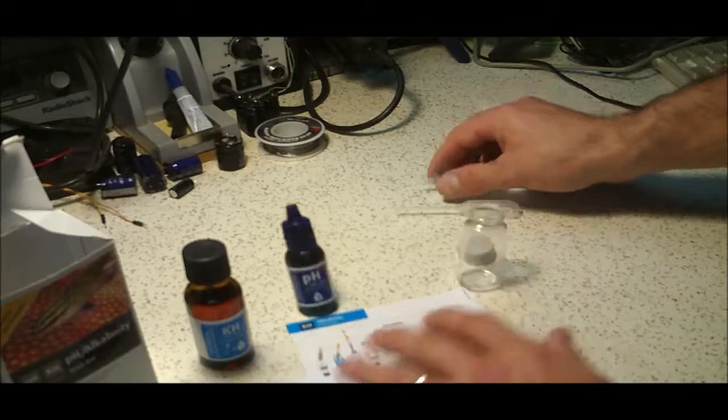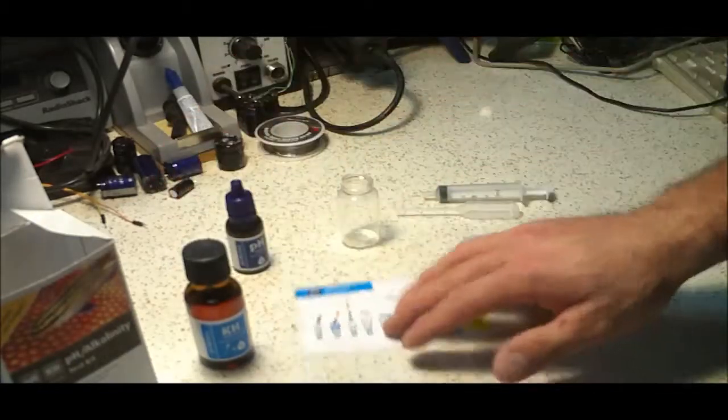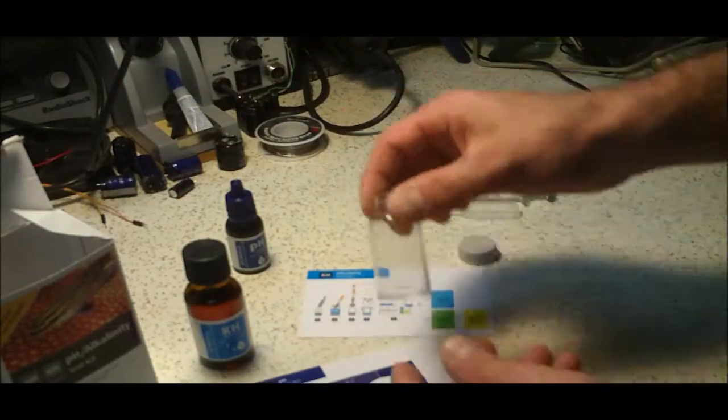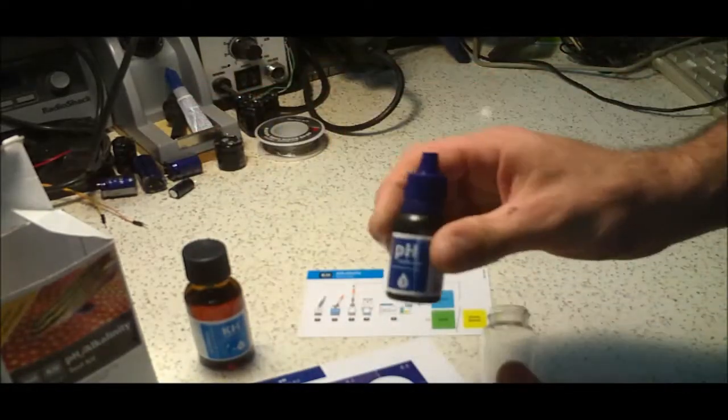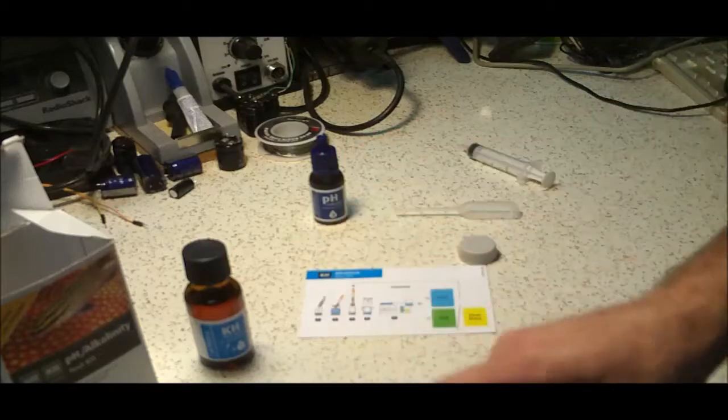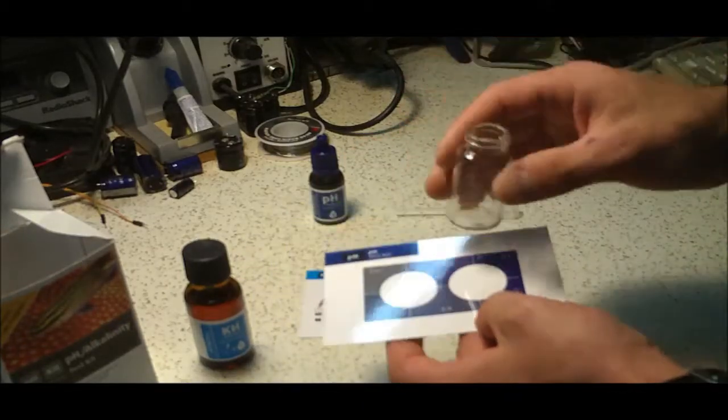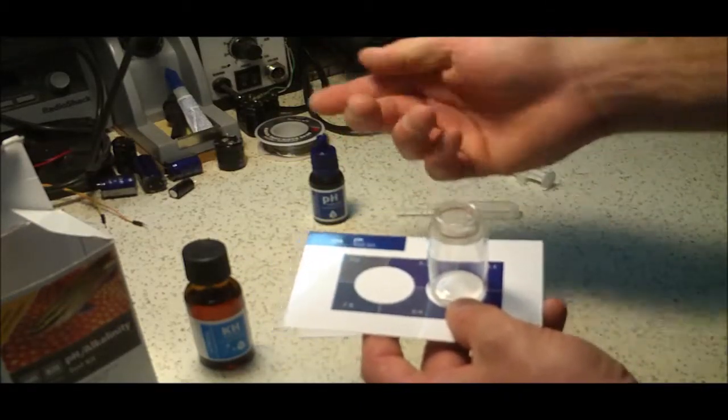So first the pH. The pH test you take 5 milliliters of water, which is what the syringe is for, you stick it in this vial. You add three drops of pH solution, shake for 10 seconds.